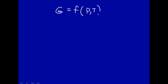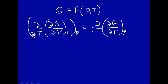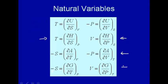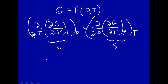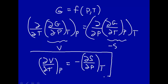Finally, let's use the Gibbs free energy, g, which is a function of pressure and temperature. How g changes with pressure at constant temperature, and take the partial derivative of that with respect to temperature at constant pressure. How g changes with pressure at constant temperature is volume, and how g changes with temperature at constant pressure is minus s. So we get the fourth Maxwell relation: how v changes with temperature at constant pressure equals minus how s changes with pressure at constant temperature.